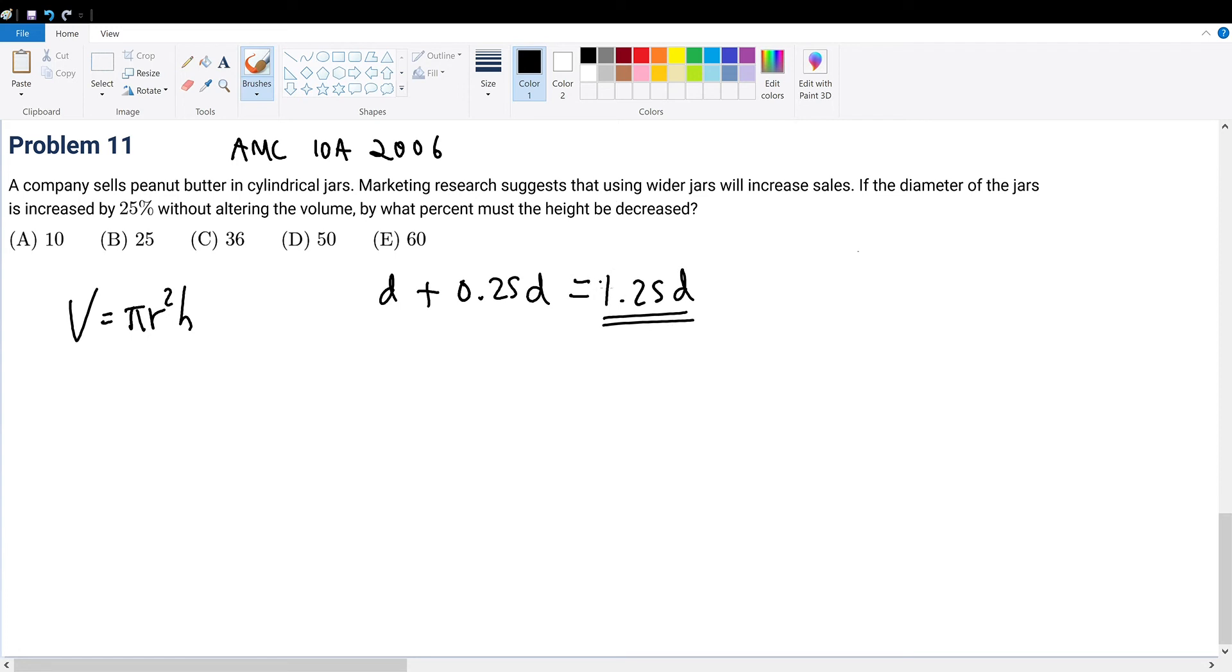Given this, how much must the height be decreased? What is the volume of the new jar? V equals πr²h. But what is r? We can rewrite everything in terms of diameter, because diameter equals 2r, so r equals d/2.